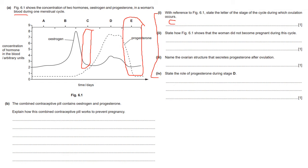Name the ovarian structure that secretes progesterone after ovulation. That is the corpus luteum — spelled L-U-T-E-U-M. Students often know what it sounds like but misspell it. The role of progesterone in section D is to maintain the endometrium or the uterine lining. Do not say 'endometrial lining' as the mark scheme marks that wrong — say endometrium or uterine lining.